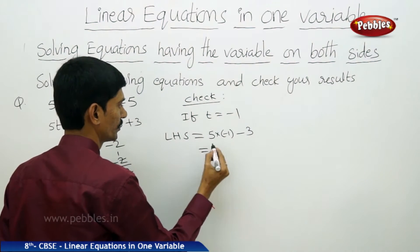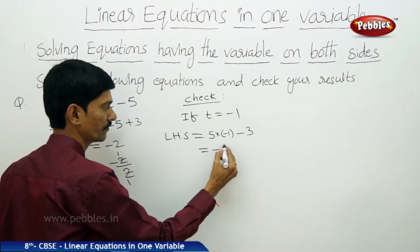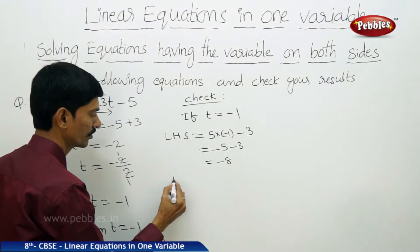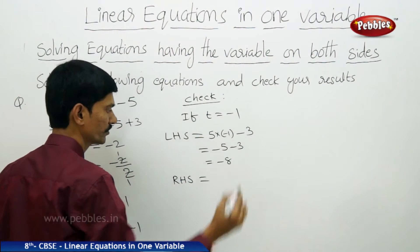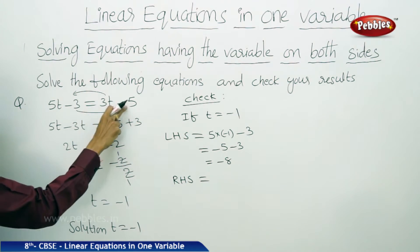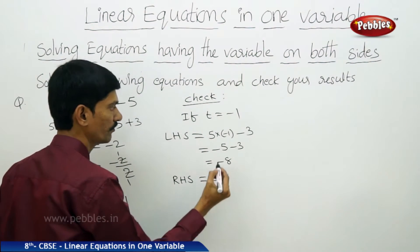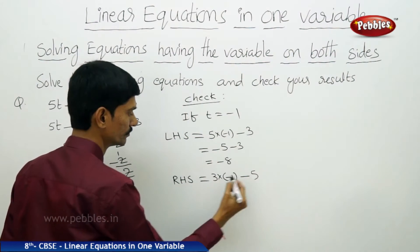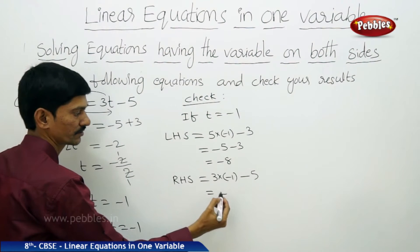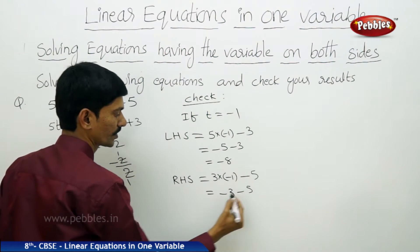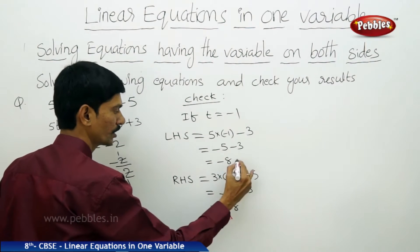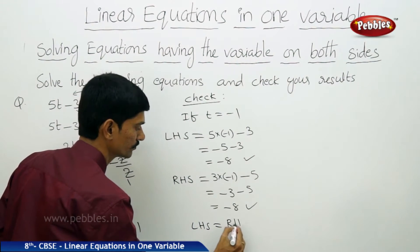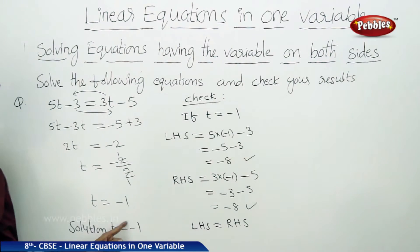Plus into minus gives minus. 5 ones are 5, so minus 5 minus 3 is minus 8. Now for RHS, which is 3t minus 5: 3 into minus 1, minus 5. Plus into minus gives minus — 3 ones are 3, so minus 3 minus 5 is also minus 8. We got LHS equals RHS, both minus 8. So our solution t equals to minus 1 is correct.